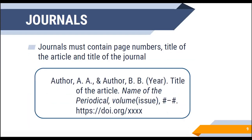Journals are another very common resource you'll be citing. Journal citations must contain the page numbers, or the portion of the journal you're citing, since you're likely looking at only a certain page number range within an issue. Very similar to a book, we start with our authors and date of publication, then the title of the article, and then the name of the periodical or journal in italics — for example, the Journal of Canadian Education. We then include the volume, issue, and page numbers, which are quite important. If the article has a DOI we add that; if not, we use a URL in its place.